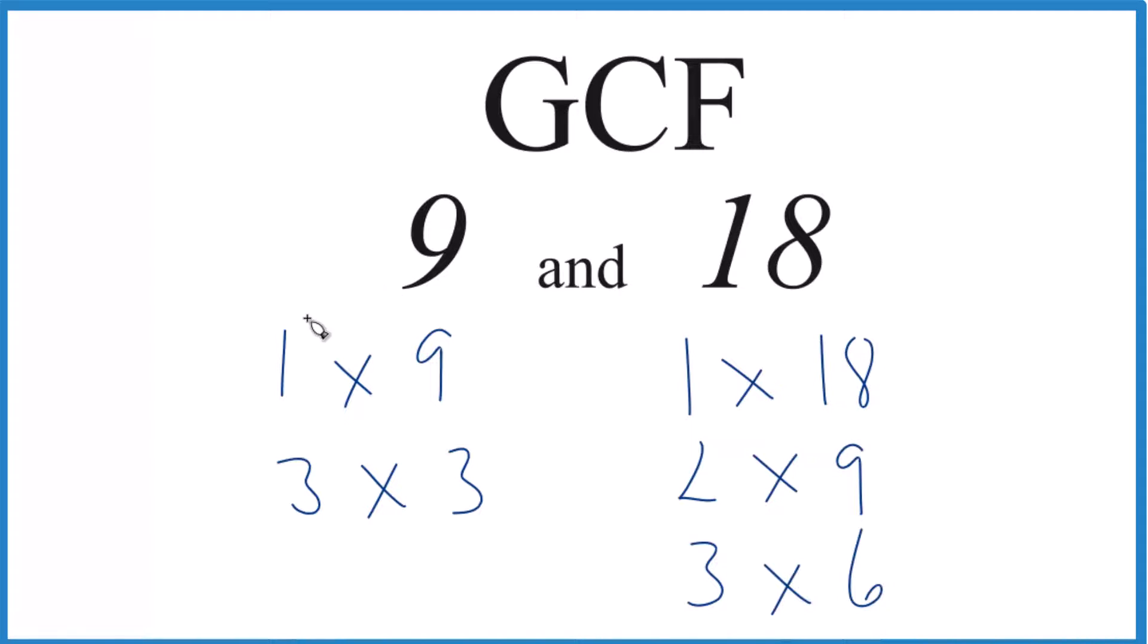So let's find a common factor. 1, that's a common factor, but it's not the greatest common factor because we have 3. Is there a factor greater than 3 that goes into 9 and 18? And it looks like 9, we have 9 on both sides, so that's the greatest factor for 9 and 18.